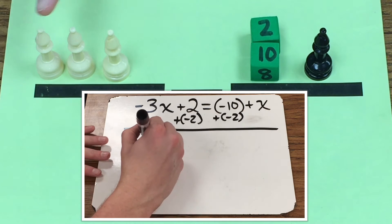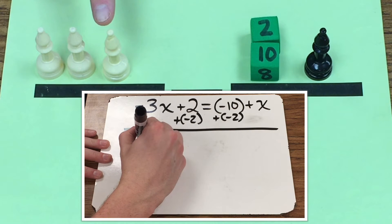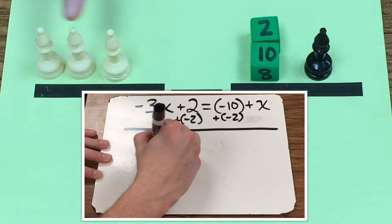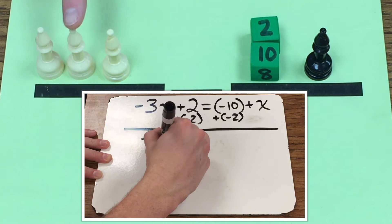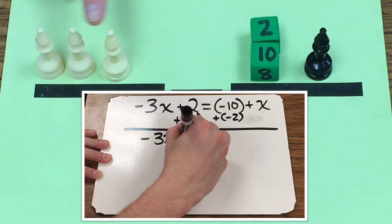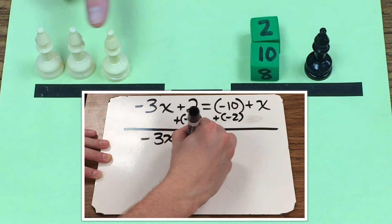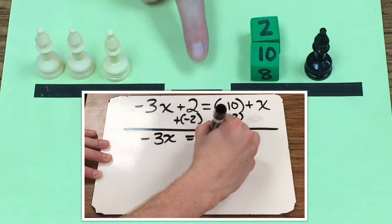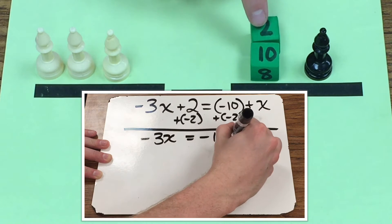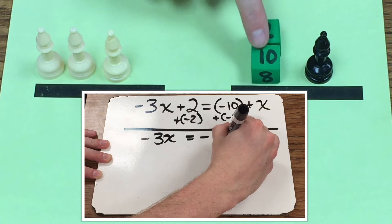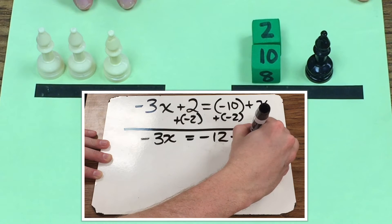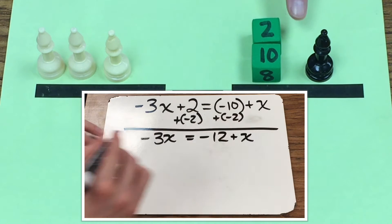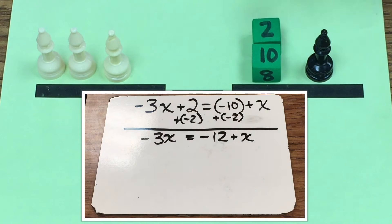Now I'm left with the opposite of 3x equals negative 12 plus x.